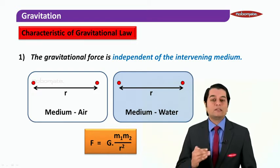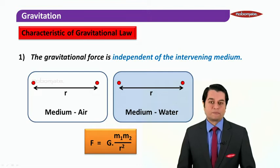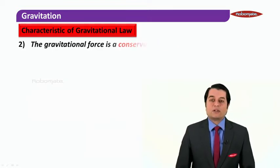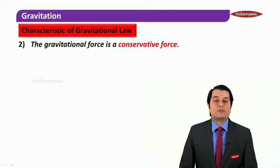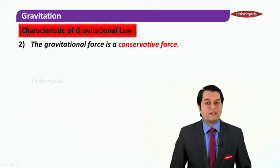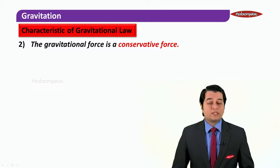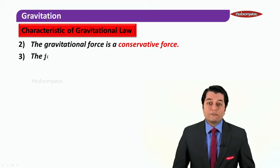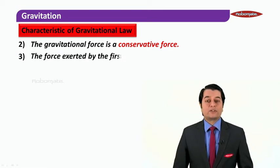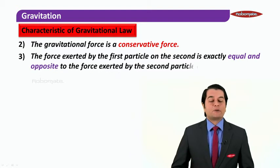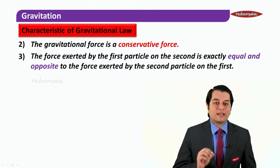The second characteristic of the gravitational law is that the gravitational force is a conservative force — meaning the work done and the energy related to the gravitational force in a given system will always be conserved. The third very important characteristic is that the force exerted by the first particle on the second is exactly equal and opposite to the force exerted by the second particle on the first.